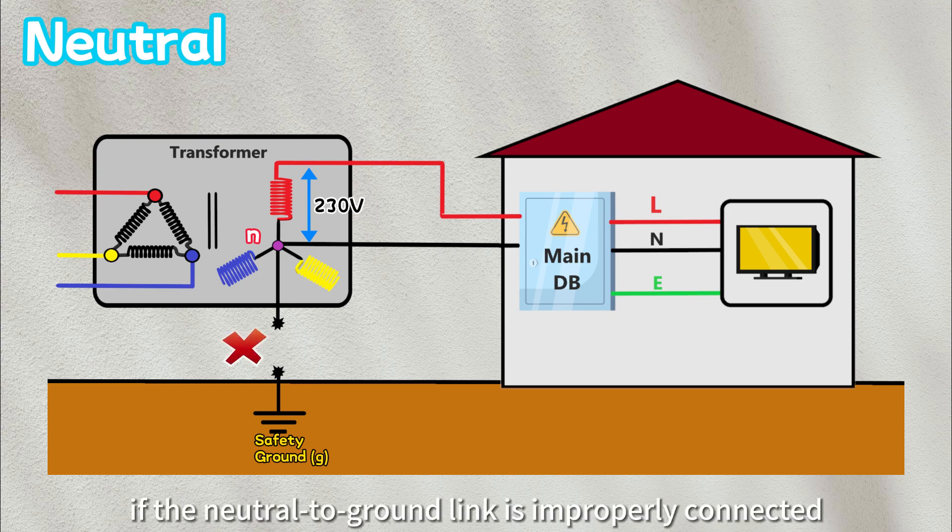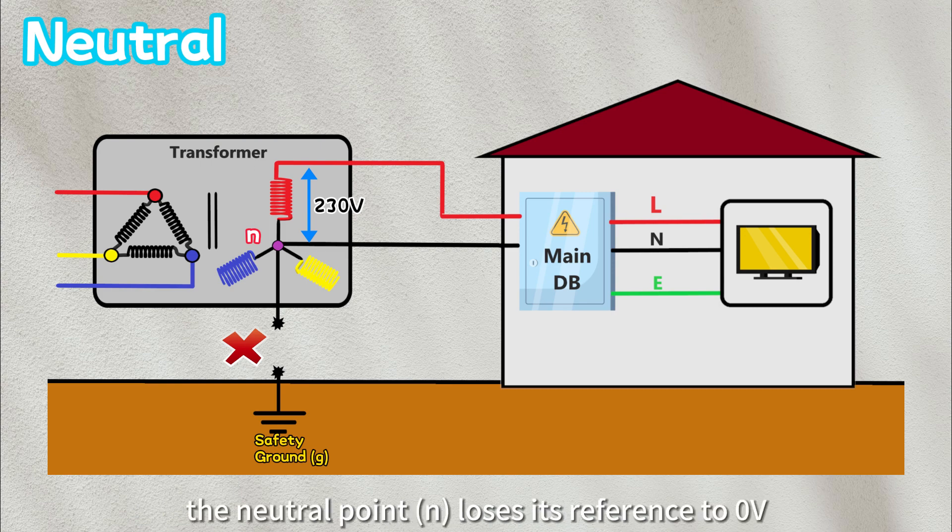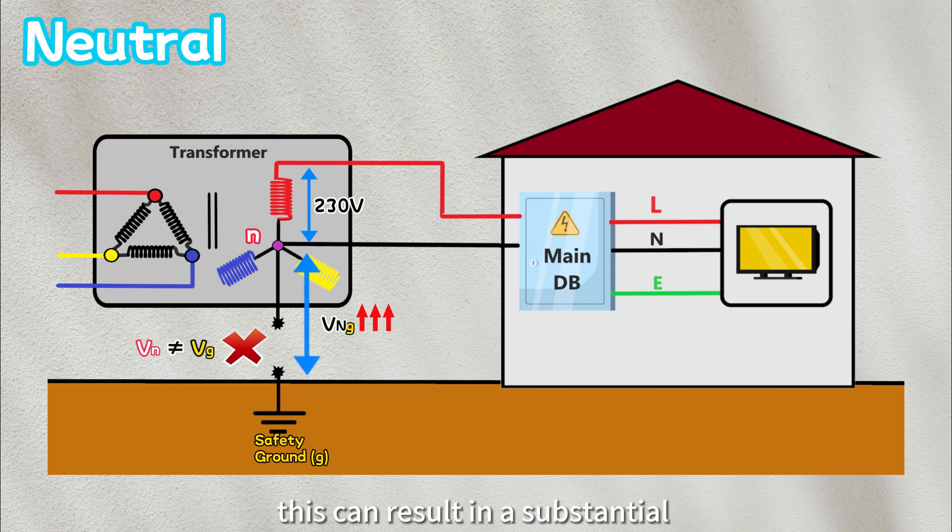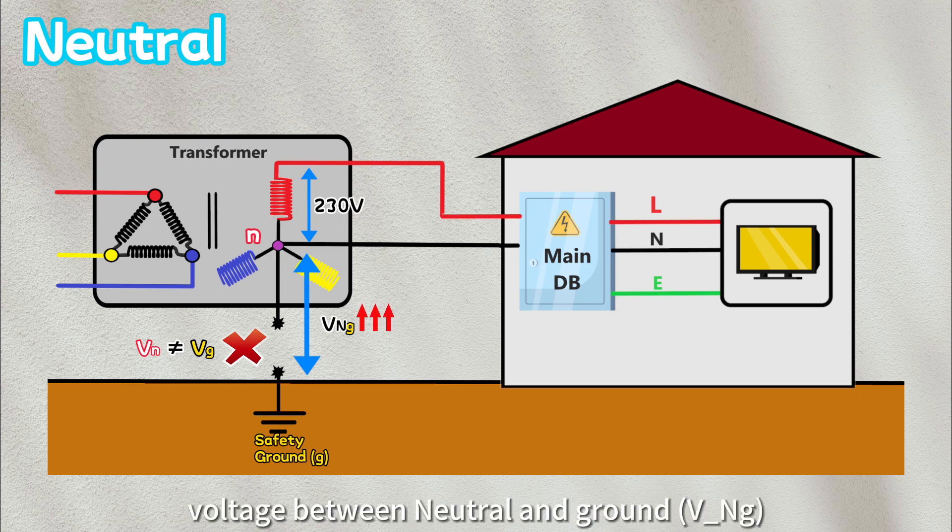if the neutral-to-ground link is improperly connected, broken, or loosened, the neutral point loses its reference to zero volts. This can result in a substantial voltage difference between neutral and ground.